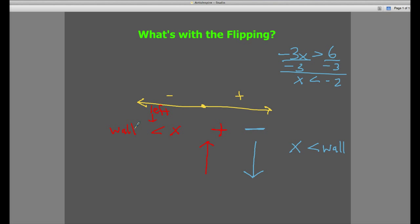So, as you can see, the idea of flipping the inequality over, when you multiply or divide, really has to do with a value judgment about what greater versus less means.